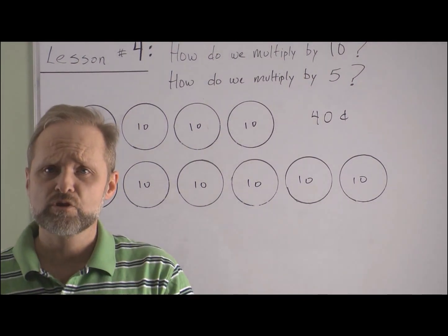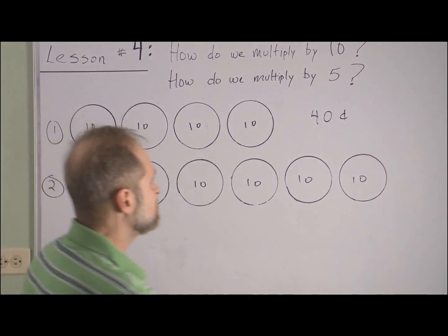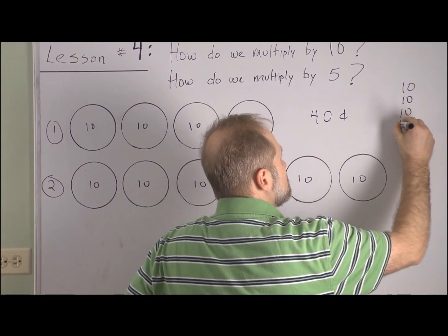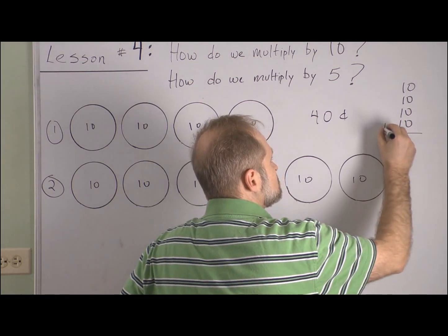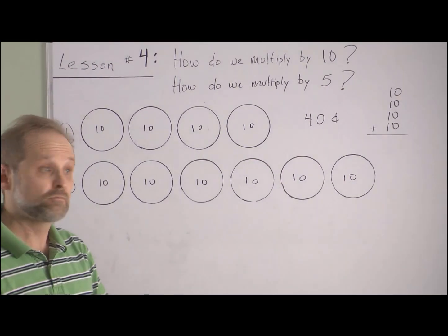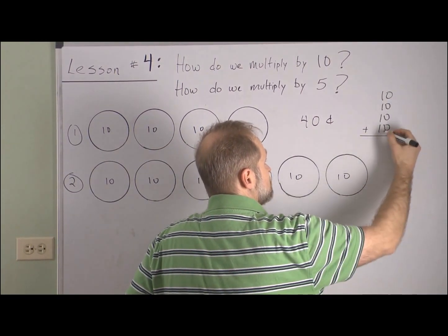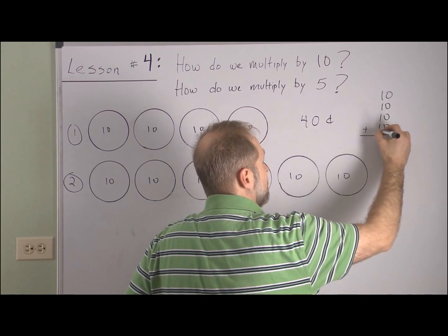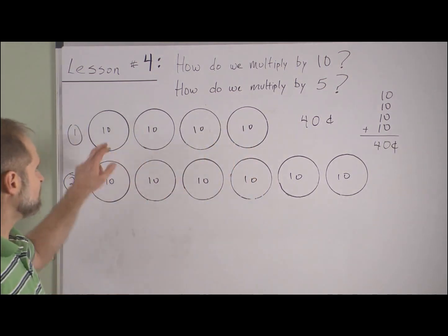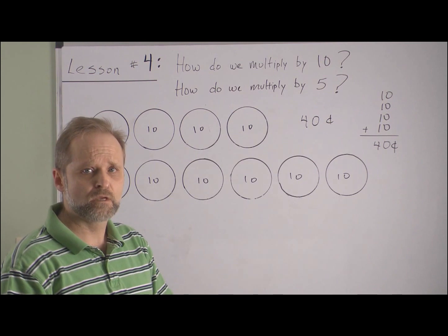I want to show you two ways to do this problem. One way is to go ahead and skip count. If you learned to skip count by ten, this is going to go quickly: ten, twenty, thirty, forty — forty cents. The second way is to take our four dimes, each having a value of ten, and add those up. Adding the units place gives zero, and adding the tens gives forty — forty cents. I like skip counting better; I think it's quicker.